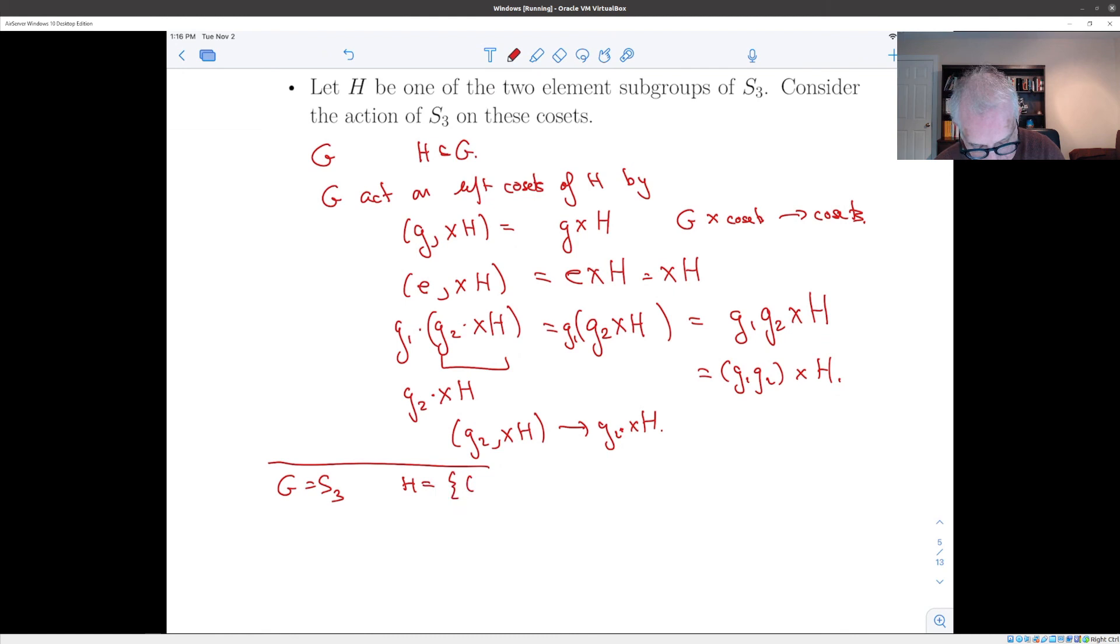If you want to look at an example of this, we could take G to be S_3 and H to be the subgroup generated by the identity and (1, 2). Then there are three cosets of H. The cosets are H itself, (1, 3) times H, and (2, 3) times H.